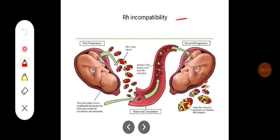The Rh antigens also come under the major blood group system and can lead to strong antigen-antibody reactions. Rh antigens do not have naturally occurring antibodies. When Rh antigens are introduced into the body for the first time, antibodies are subsequently produced. When Rh positive antigen is introduced a second time, Rh incompatibility can occur.